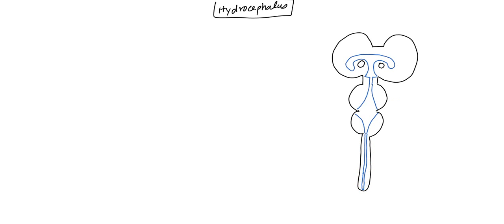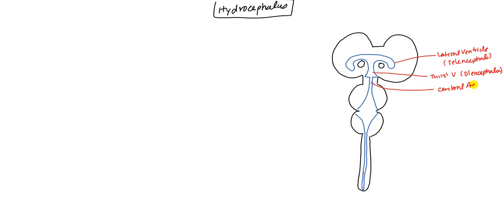This is looking at someone head-on — if you're looking at someone's face and you cut off the face and see the brain behind them. The lateral ventricle is the area found in the telencephalon. The lateral ventricle drains into the third ventricle, which is in the diencephalon. That in turn goes into the cerebral aqueduct, which is primarily found in the midbrain. Then we have the fourth ventricle, which is found in the pons and medulla — the metencephalon — and then that continues into the spinal cord.